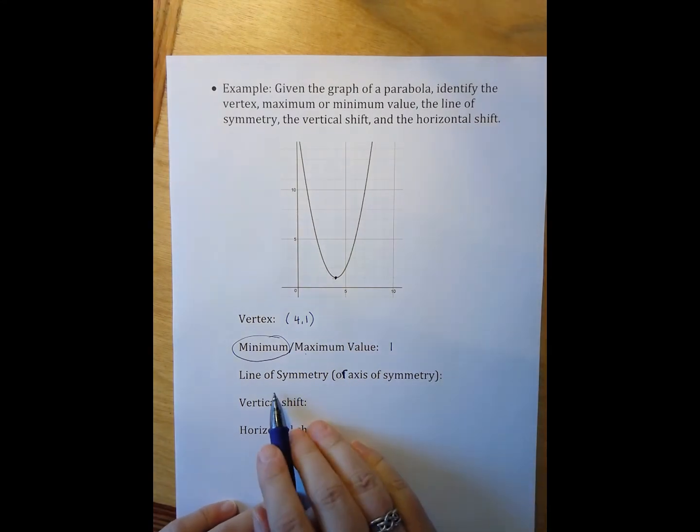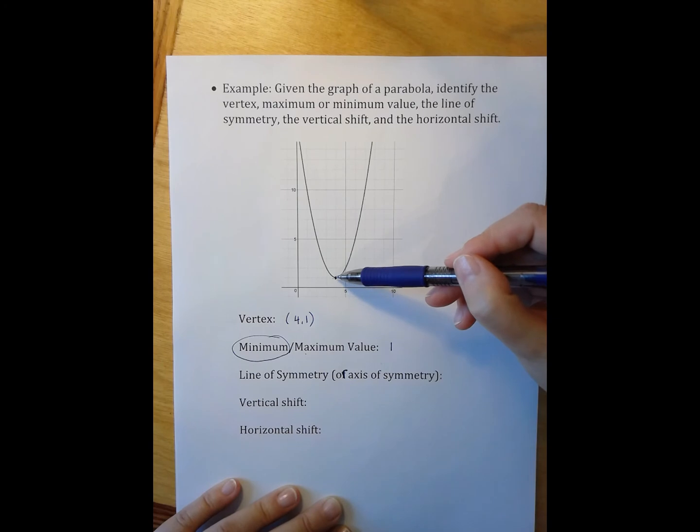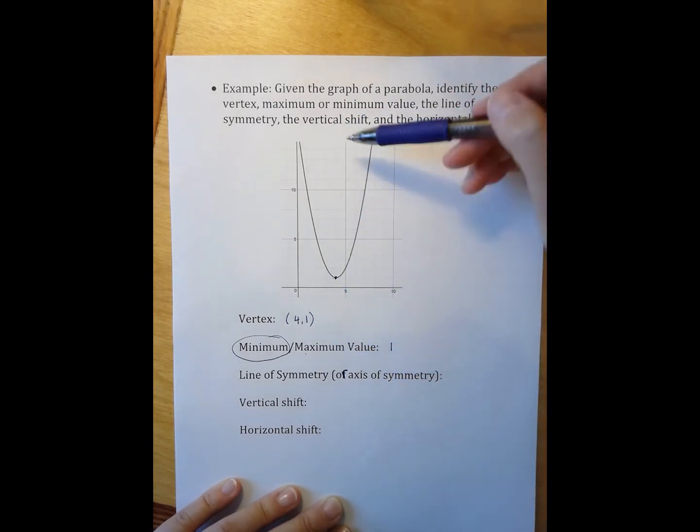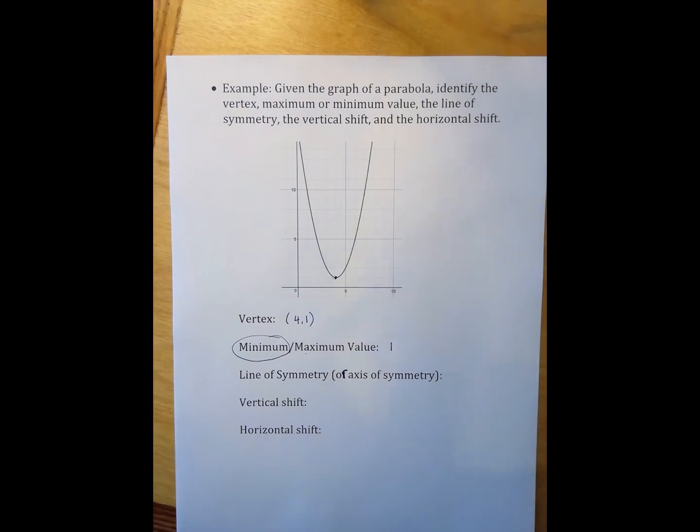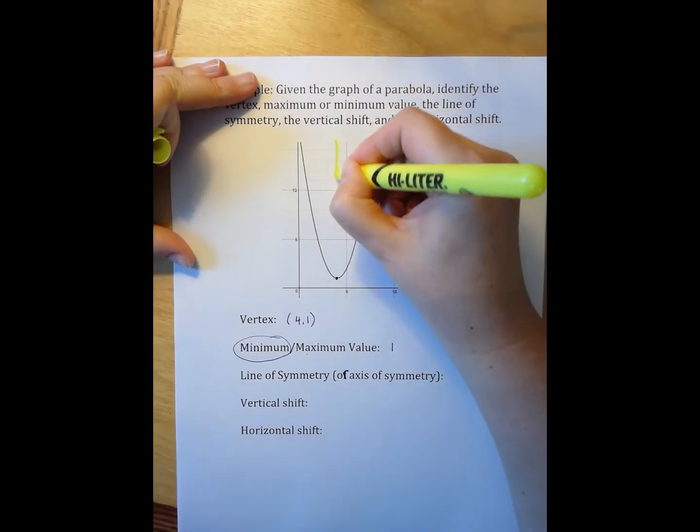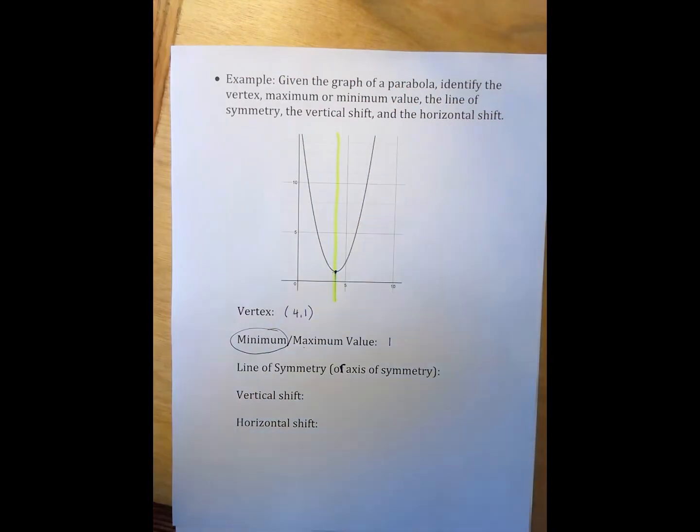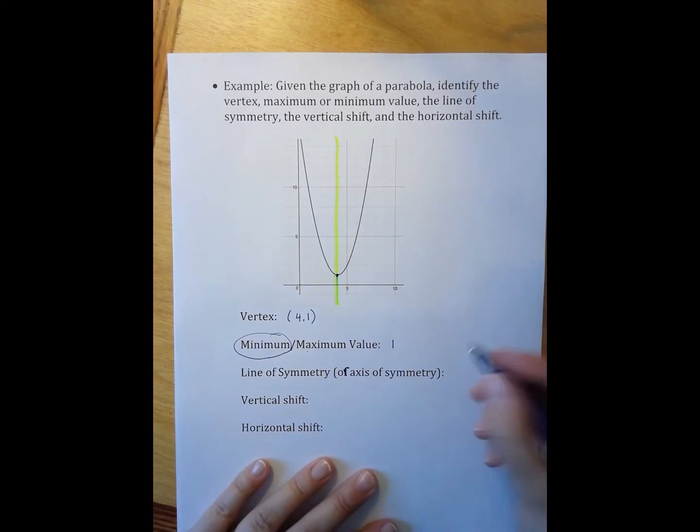The line of symmetry occurs through the vertex, and it's always going to be a vertical line. So that line of symmetry occurs right here. This is where if I folded my paper over that line, my parabola would end up back on itself. And so that line of symmetry is x equals four.